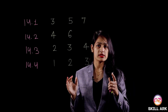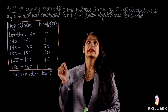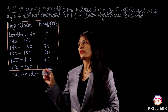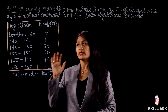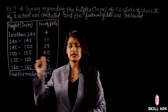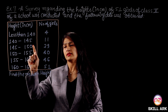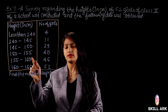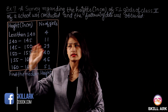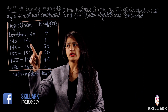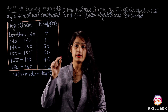Let's take a look at the examples. Example number 7: a survey regarding the heights in centimeters of 51 girls of Class 10th of a school was conducted and the following data was obtained. Here we have a table given in less-than format: less than 140, less than 145, less than 150, less than 155, less than 160, less than 165. The difference between consecutive values is 5.